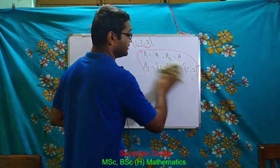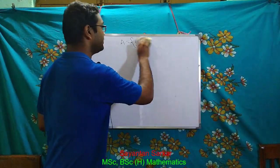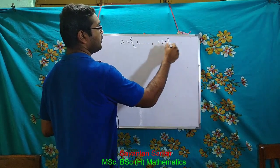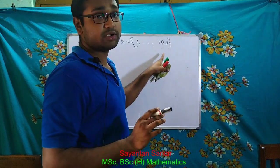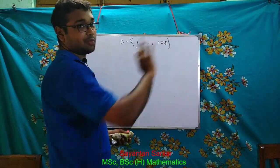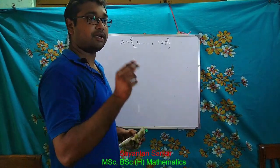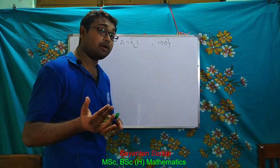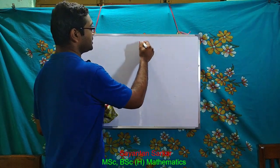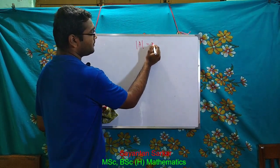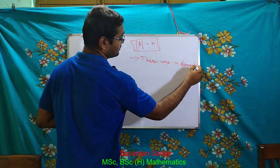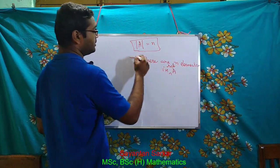Now let me extend this. If a set has elements from 1 to 100, don't even try to find the subsets by this process — it would fill the entire world. So we should find a general formula applicable for any number of elements. The number of elements of a set is known as its cardinal number, and it is denoted by n(A), meaning there are n elements in set A.